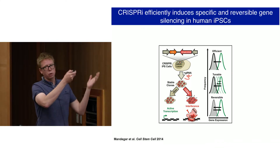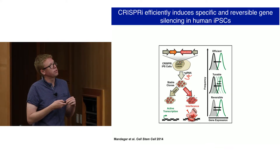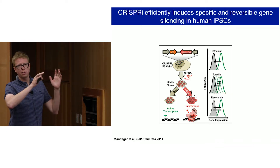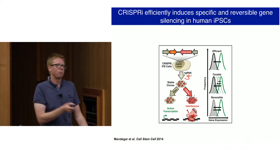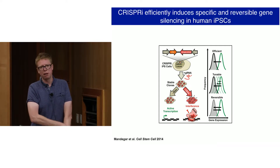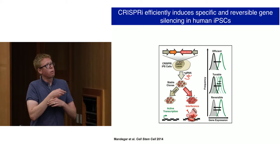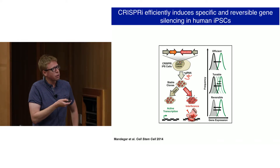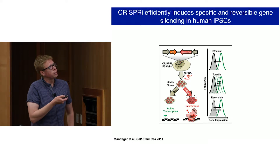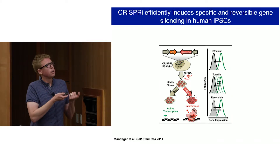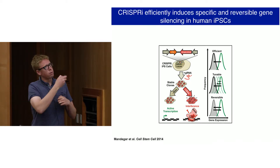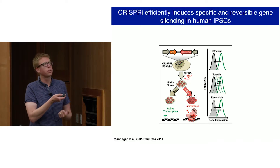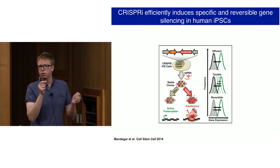Most of that work was done in K562 chronic myeloid leukemia cells, with some in HEK293s — standard cancer cell lines that may or may not model many types of biology. We were curious whether we could expand into more developmental models. Together with Bruce Conklin's lab at the Gladstone Institute at UCSF, we asked whether we could control transcription in human iPS cells. Rather than transient transfection or lentiviral delivery, we knocked our constructs into a safe harbor locus within the cell — the AAVS1 locus — for stable, controlled expression over time.